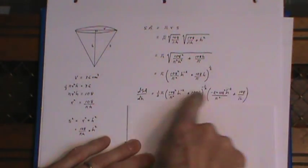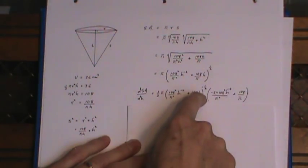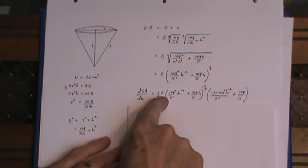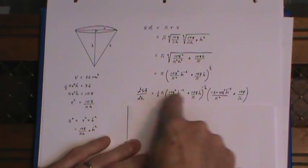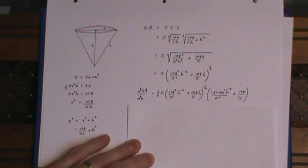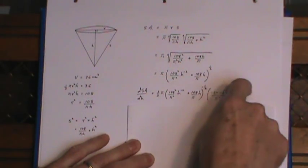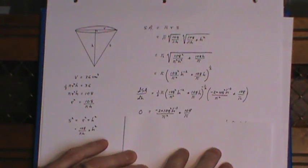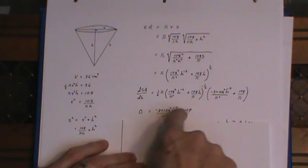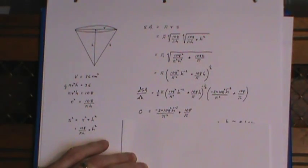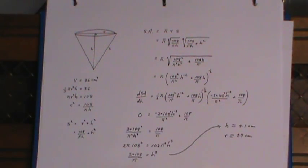And when I put this equal to zero, you see this is on the bottom so I'm not concerned with that, I'm not concerned with the half pi out in front. The only thing that could possibly make this expression equal to zero would be this expression on the end, and that's what I put equal to zero in this line here. And the rest of this is just trying to isolate the h from this.